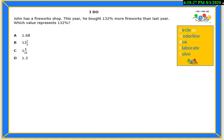Let's go ahead and start by reading the I Do problem. John has a fireworks shop. This year he bought 132% more fireworks than last year. Which value represents 132%?